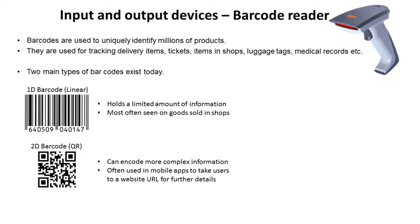The first device is the barcode reader. The humble barcode has been around for a long time and is used to uniquely identify millions of products. They're used for tracking delivery of items, on tickets, items in shops, luggage tags, medical records, and more. The first original type of barcode, dating back to the 1970s, was the 1D linear barcode. It holds a limited amount of information but we still see it in use today, most commonly in supermarkets and shops.